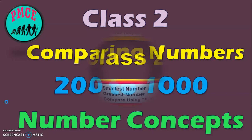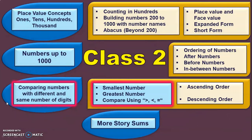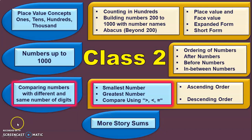Let us go into the details of this video to see what the learning outcomes are in class 2 under number concepts for numbers up to 1000. The learning outcomes are: place value concepts dealing with 1s, 10s, 100s and 1000s; numbered activities for numbers up to 1000 like ordering of numbers, after numbers, before numbers and between numbers; comparing numbers which we are going to see in this video; and more story sums.